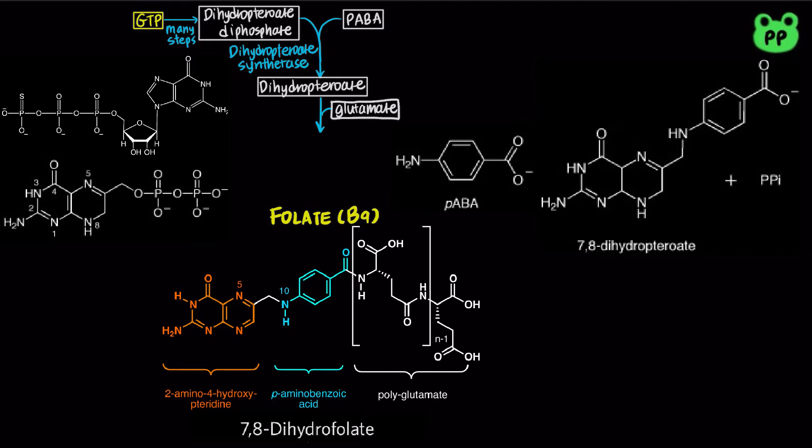This condenses with glutamate to form 7,8-dihydrofolate, abbreviated as FH2, by the enzyme dihydrofolate synthase.